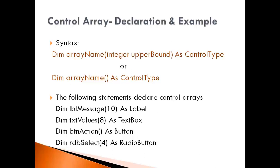Here are example statements declaring control arrays. The first is lblMessage — using the prefix lbl for label — declaring a label control array with an upper bound of 10, which actually creates 11 labels. Then txtValues has an upper bound of 8, meaning 9 text boxes from index 0 to 8. Next, btnAction has no upper bound specified but still creates a button control array. Finally, rdbSelect with an upper bound of 4 creates 5 radio buttons.